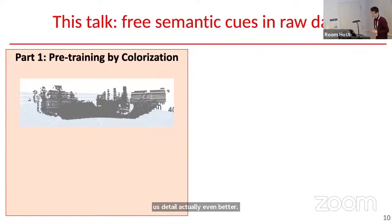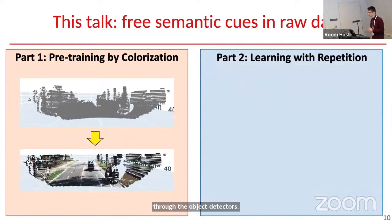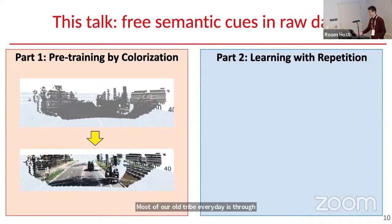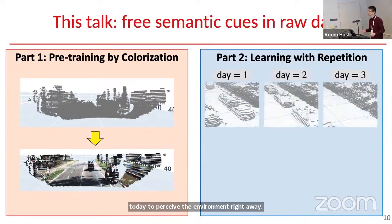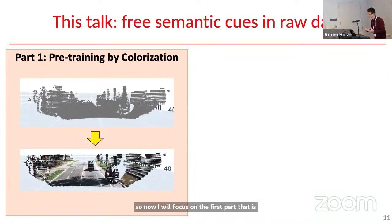In this talk, I'll focus on several free semantic cues in the raw data we can use to lower labeling effort and help detect objects better. In the first part, I'll talk about pre-training by colorization: if we give point clouds and learn to colorize them, this turns out to be a strong pre-training objective for 3D object detectors. In the second part, I'll dive into learning with repetition — using data collected over repeated daily traversals to make tomorrow's predictions better.